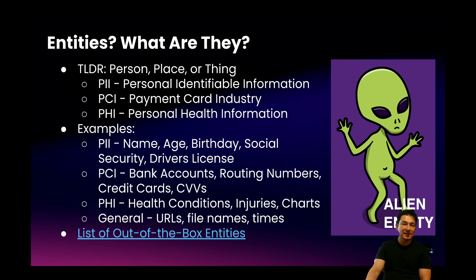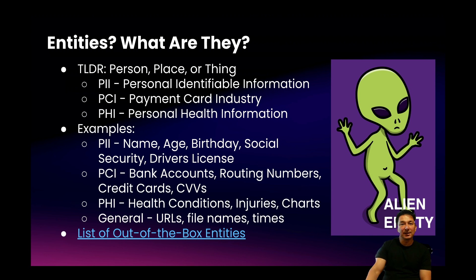Some common examples of personal identifiable information are things like name, age, birthday, social security number, and driver's license. For payment card industry-related items, you have bank accounts, routing numbers, credit cards, and CVV numbers. For personal health information, you have health conditions and injuries. And some of the more general entities are URLs, file names, and dates.